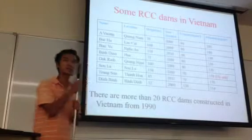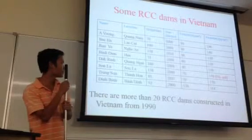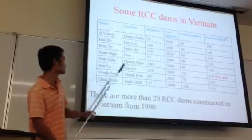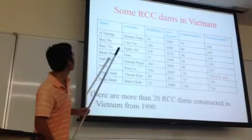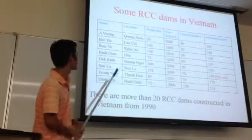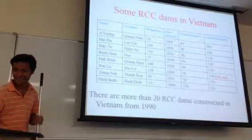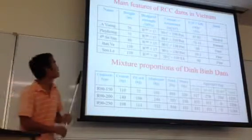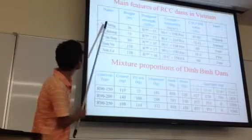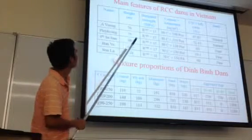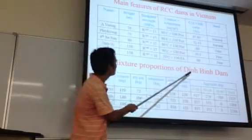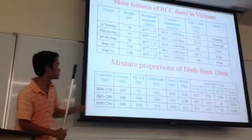We started constructing dams using RCC in 1990, and until now there are more than 20 RCC dams in Vietnam. Here are some of those dams, as you can see. Some main features of RCC dams in Vietnam — this shows the names of the dams. This table shows the admissible mix proportions, particularly for the Dinh Binh Dam.